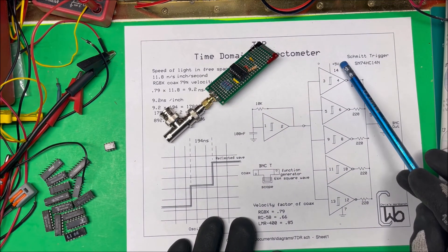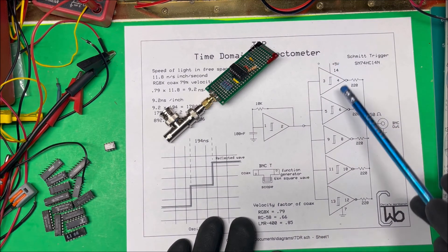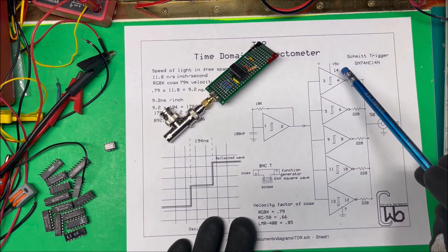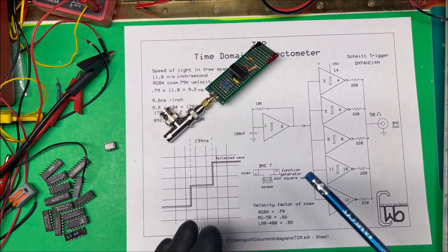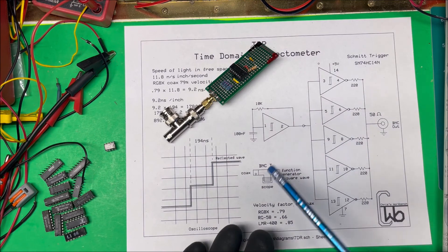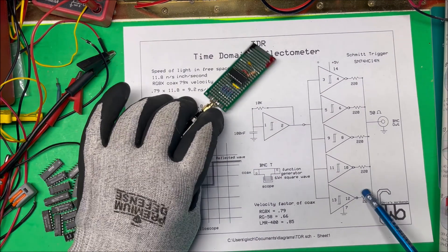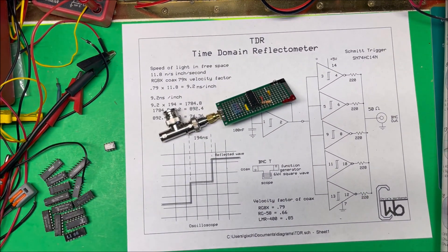One other thing is that when you put five volts on this, the Schmitt triggers are good up to five volts but then I get a lot of distortion on it, so I kept it, I ran it at about four volts and that seemed to be the best. So keep it under five volts there. So anyway, that's a TDR and it worked out good, thank you.